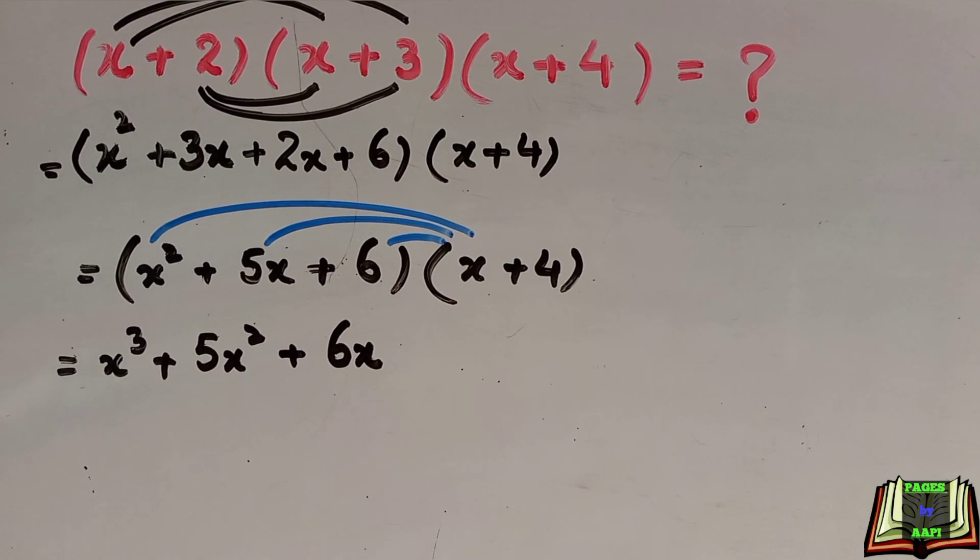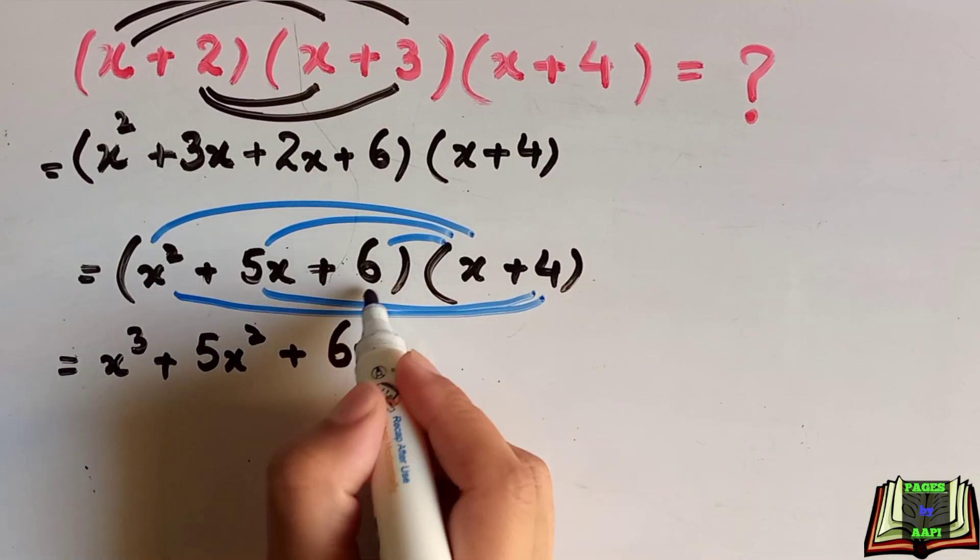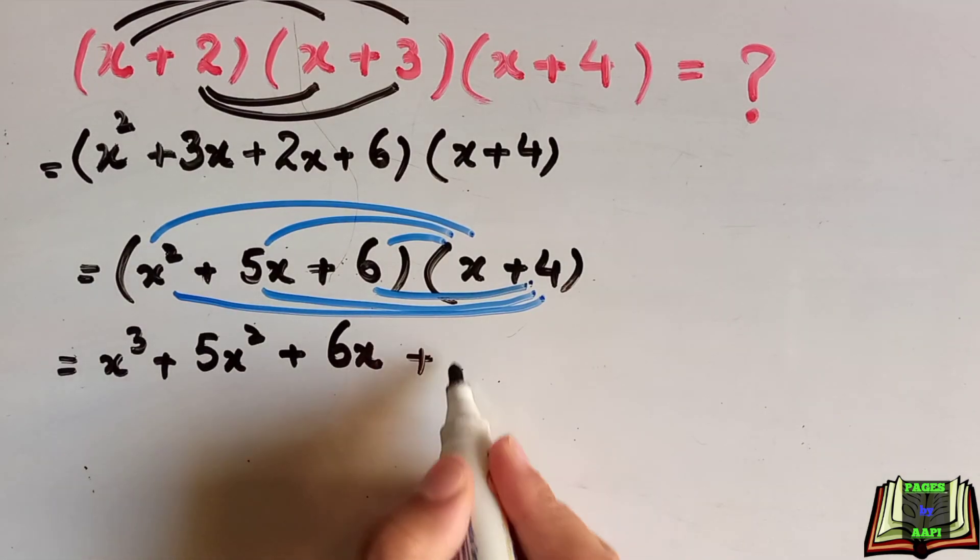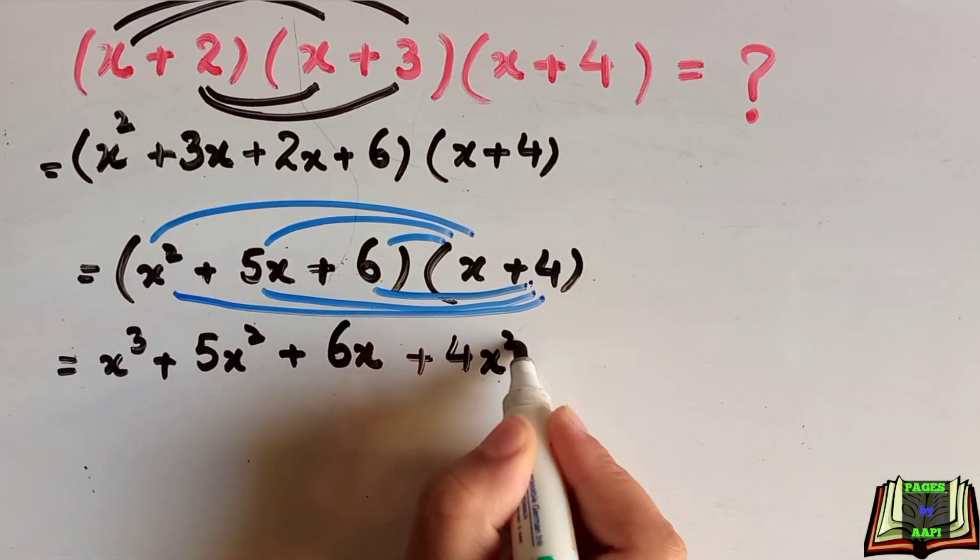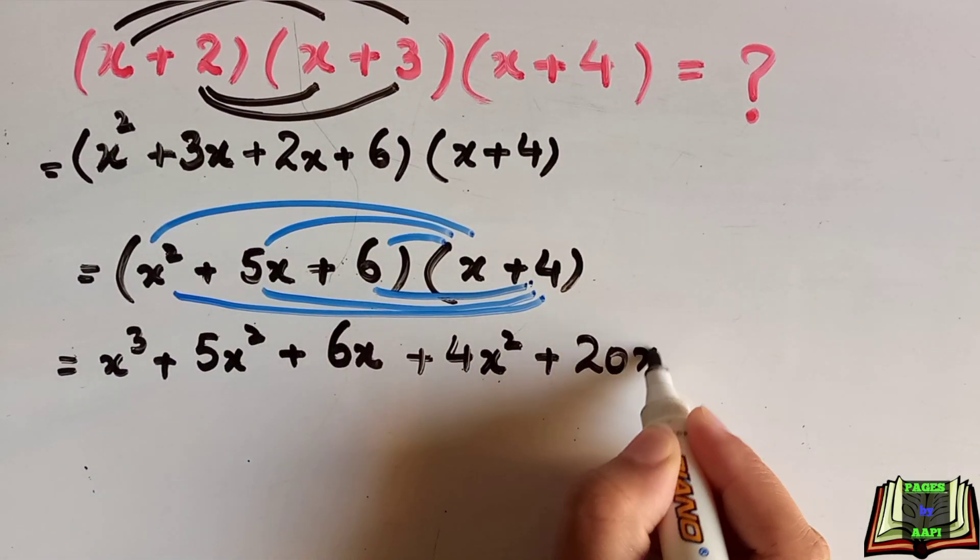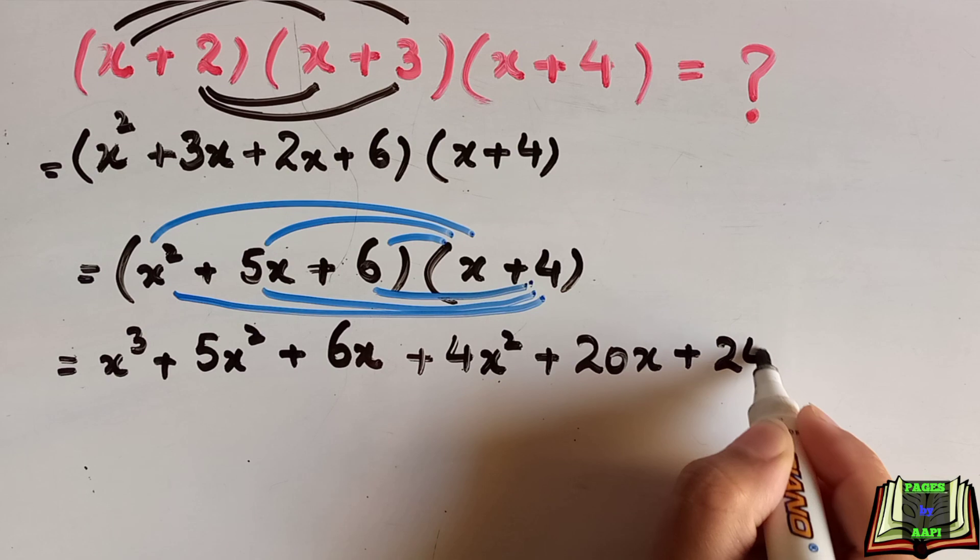In the same way we will multiply x square into 4, 5x into 4, and 6 into 4. x square into 4 is 4x square. 5x into 4 is 20x plus 6 into 4 is 24.